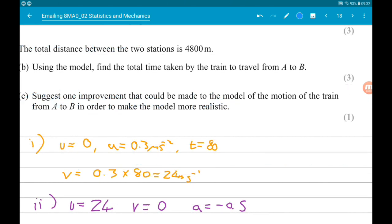Okay, then for part C, we want to suggest one improvement that could be made to the model of the motion of the train from A to B in order to make the model more realistic. Okay, so I'll say the big one that we've assumed is constant acceleration. Now, acceleration is not going to be constant. As your velocity increases, so too do resistant forces such as air resistance. So what we could do is instead of assuming constant acceleration, assume variable acceleration. And in our graphs, we would be using curves instead of straight lines for the acceleration.